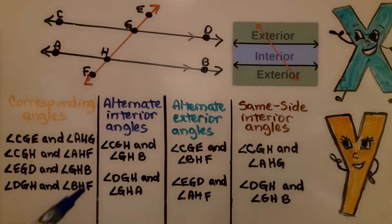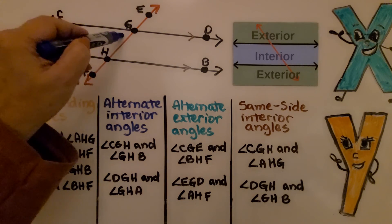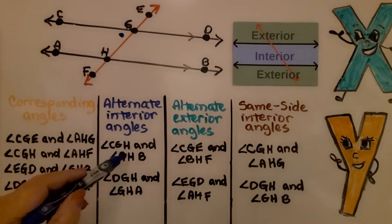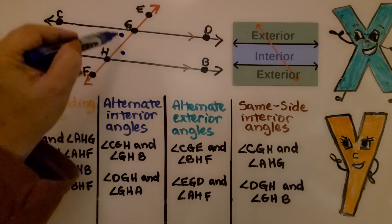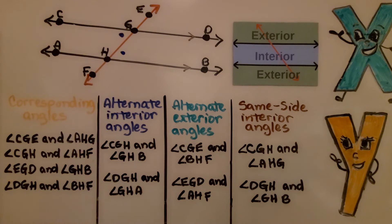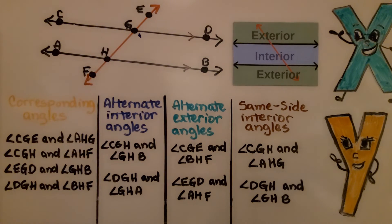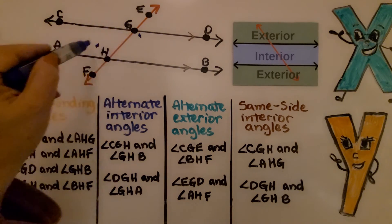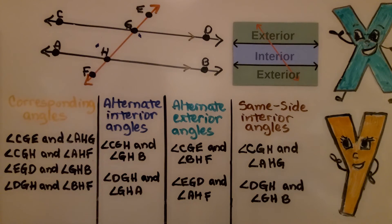For alternate interior angles, we have angle CGH and angle GHB — they're on opposite sides of the transversal but on the inside of the parallel lines. The other pair of alternate interior angles is angle DGH and angle GHA — also on opposite sides of the transversal on the interior of the parallel lines.